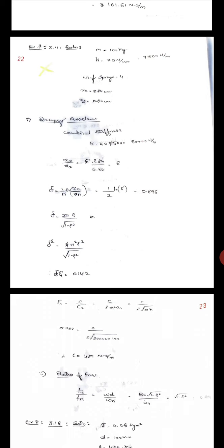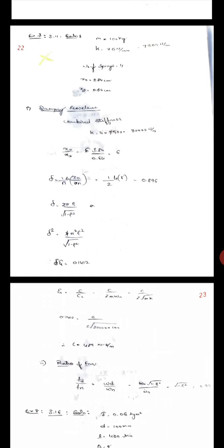Initial amplitude is 3.84 cm. After 2 cycles, amplitude x2 is 0.64 cm. Determine the damping resistance and the ratio of frequency.